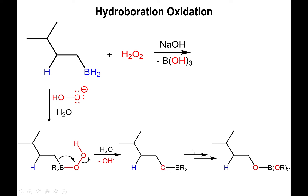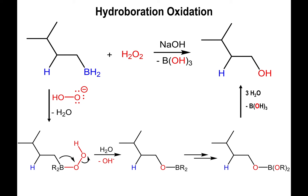This process can happen two more times for every alkyl group bound to boron, so you could ultimately form a trialkyl borate byproduct. Finally, treating this with water under slightly acidic conditions will substitute the alcohols for hydroxide. You end up making boric acid as a byproduct and produce your alcohol.